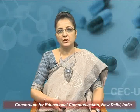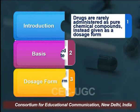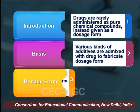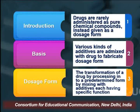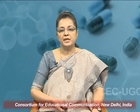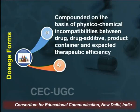What is a dosage form? Drugs are rarely administered as pure chemical compounds; instead, they are given as a dosage form. Various kinds of additives are admixed with drugs in order to fabricate a dosage form. The transformation of a drug by processing it into a predetermined form by mixing with additives — each additive having a specific function — is a dosage form.